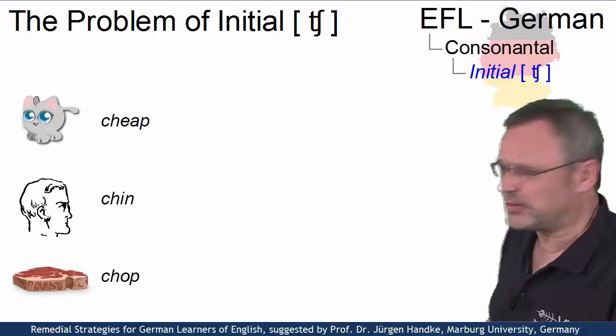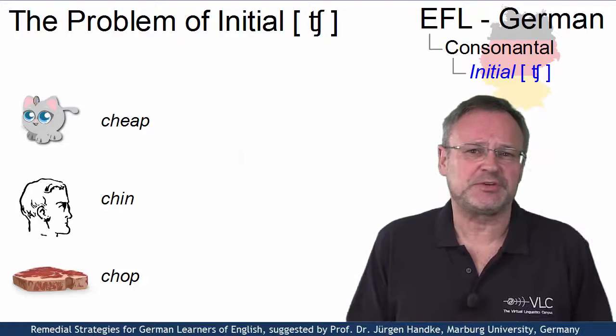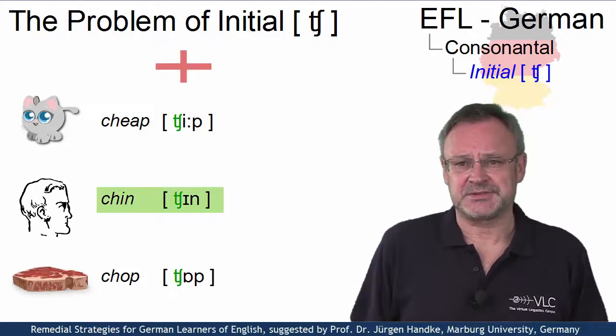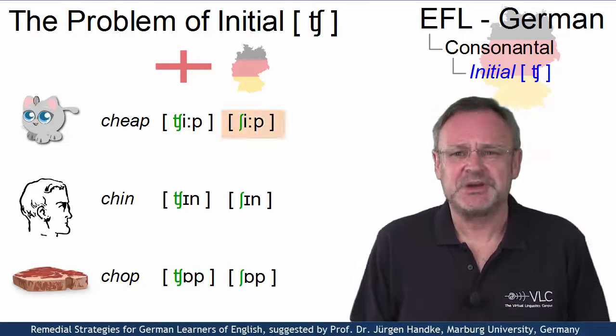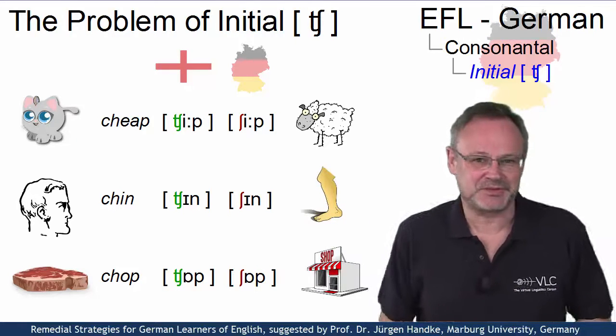Look at these English words. Do you pronounce them with a voiceless post-alveolar affricate and say cheap, chin and chop? Or is your version something like sheep, shin or shop? In which case even different meanings may be the result.